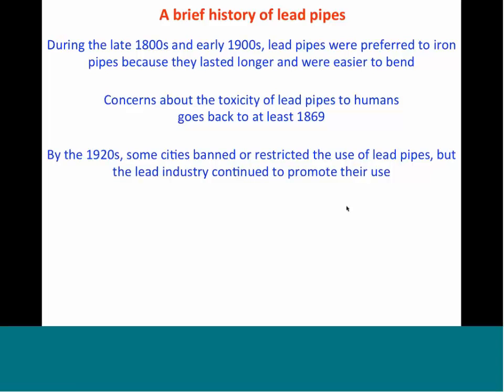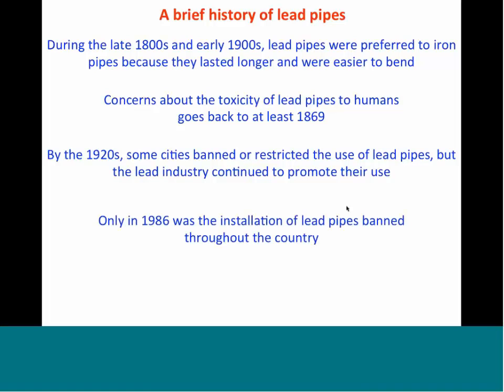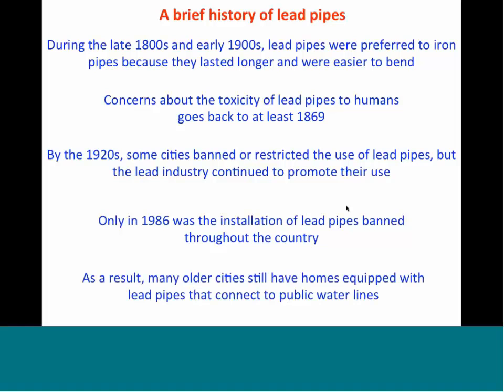By the 1920s, some cities around the U.S. were banning or restricting the use of lead pipes. Around that same time, the lead mining industry really pushed to promote their use despite these concerns. So lead pipes and lead solder continued to be used, and only in 1986 was there finally a nationwide ban on using lead pipes. But the problem is that lots of houses already had lead pipes installed — some of them 100 years old, back when lead pipes were very common. Many older houses have lead pipes connecting them to the water main on the street, and a lot of those haven't been upgraded either because the owners didn't know or didn't have the financial ability to do so.